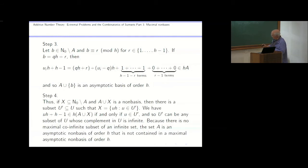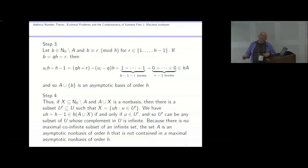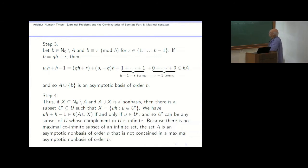Now let's show that it's not contained in any maximal non-basis. If you take a number b which isn't in a and is congruent mod h to something other than zero, there's an analogous arithmetical fact that if you add b to a, you can actually represent every number. The only numbers you have to worry about are the missing ones, and you can represent all of them if you add a number not congruent to zero mod h. So any number not zero mod h cannot be added to a — if you were to do that, it would turn from a non-basis to a basis.